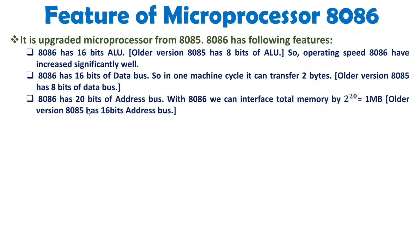With 8086 there are 20-bit address lines — A0 to A19, a total of 20 address lines. Based on this 20-bit address bus, you can interface a total memory of 2 to the power 20, which is 1 MB. The older 8085 had a 16-bit address bus, so it could interface 2 to the power 16, that is 64 KB. With 8086 we can interface 1 MB compared to 64 KB of 8085.